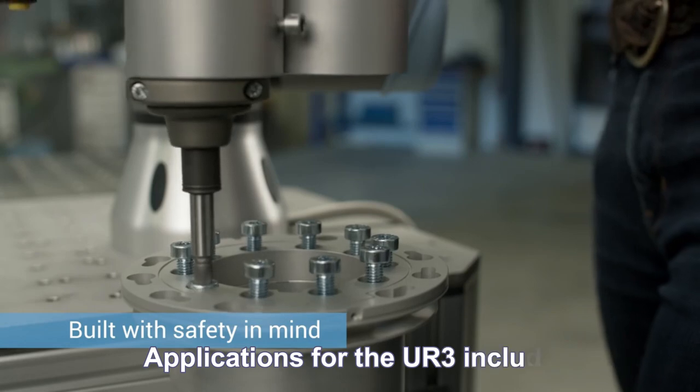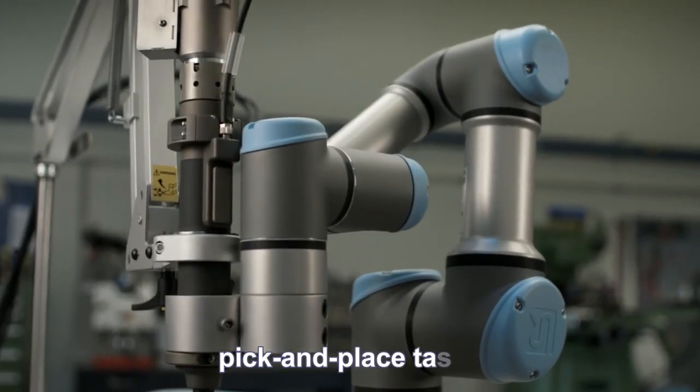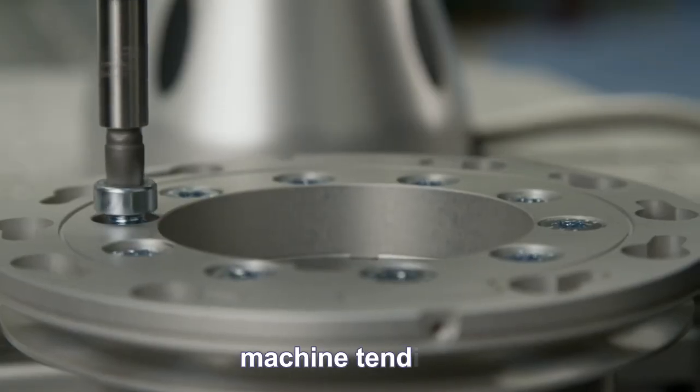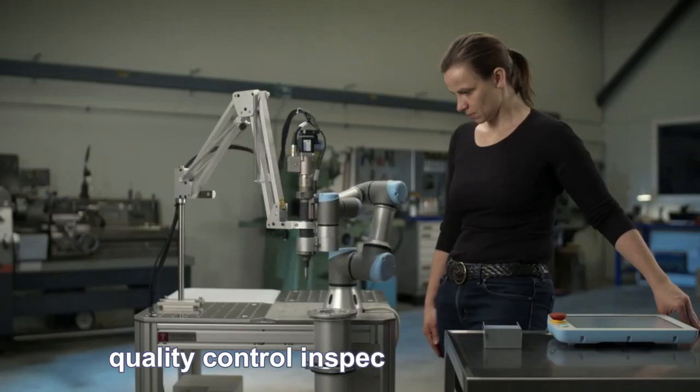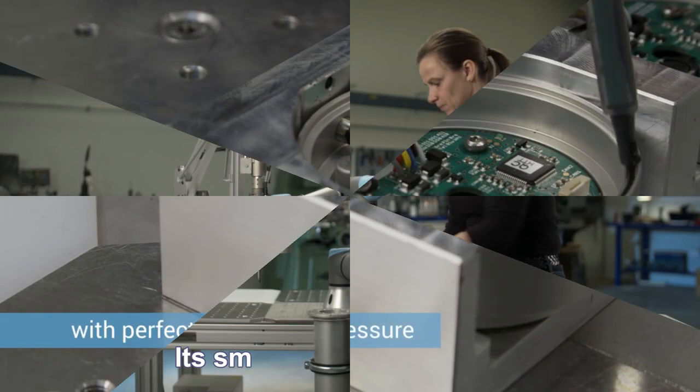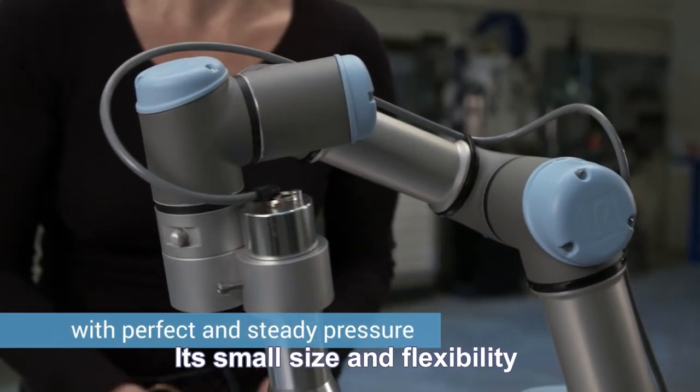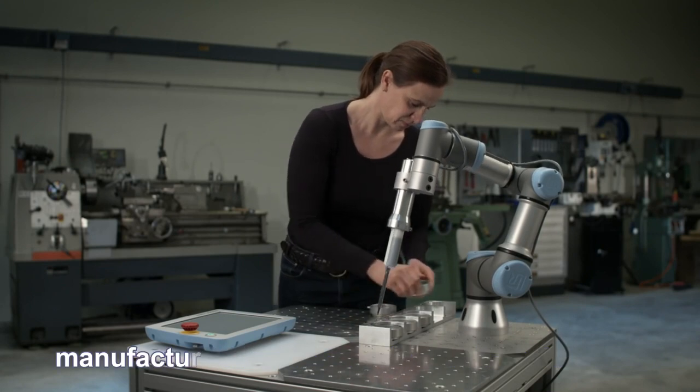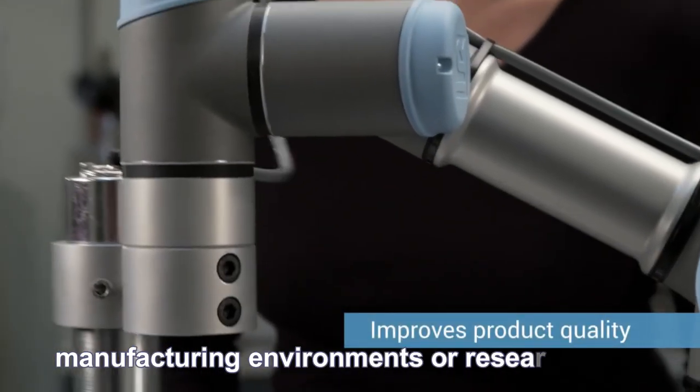Applications for the UR3 include pick and place tasks, assembly operations, packaging, machine tending, quality control inspections and more. Its small size and flexibility make it ideal for use in small-scale manufacturing environments or research labs.